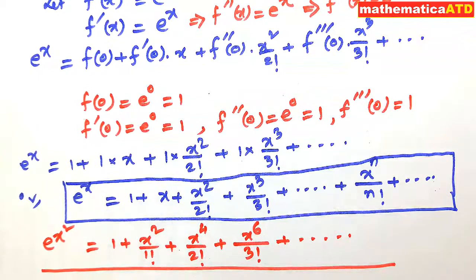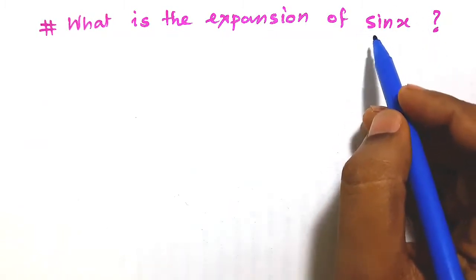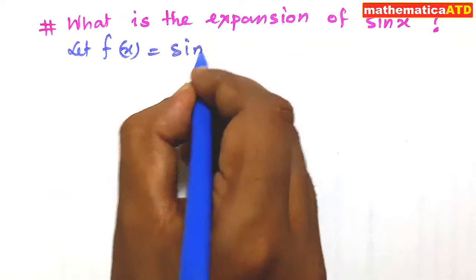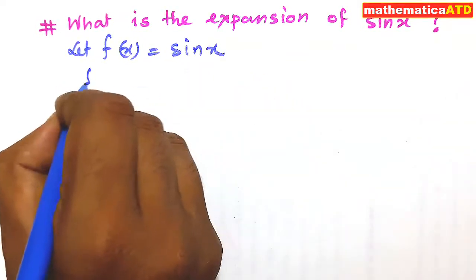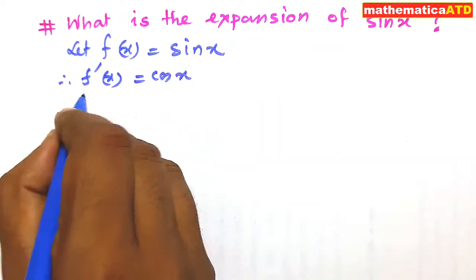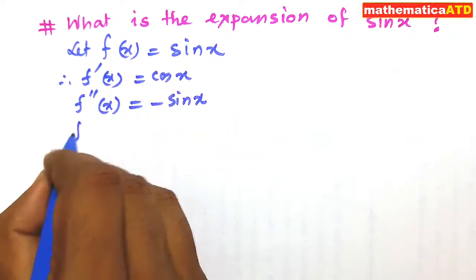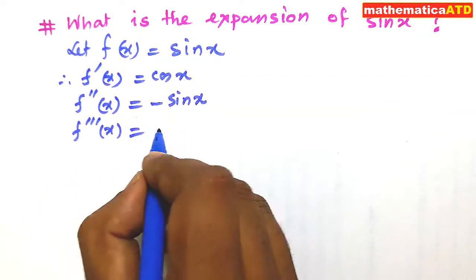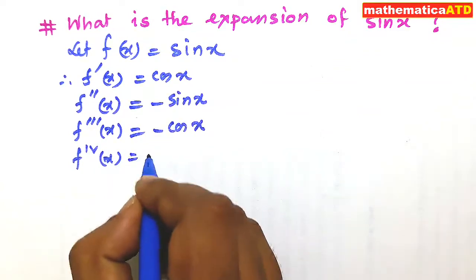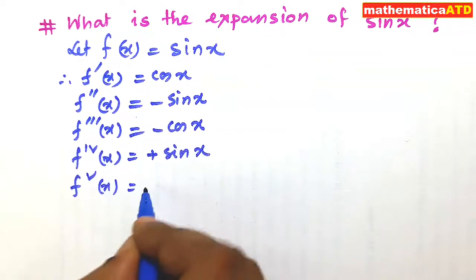Next we shall see the expansion of sin x. To find the expansion of sin x, we shall again use the Maclaurin's Infinite Series. Let f(x) equal to sin x. First derivative: f'(x) is equal to cos x, since d/dx of sin x is cos x. Second derivative: f''(x) is equal to minus sin x. Third derivative: f'''(x) is equal to minus cos x. Fourth derivative: f''''(x) is equal to sin x. Fifth derivative is equal to cos x.